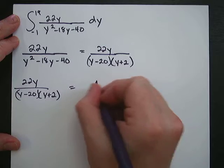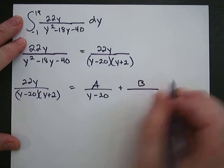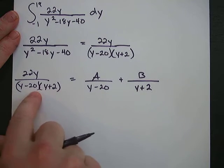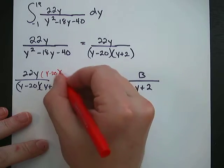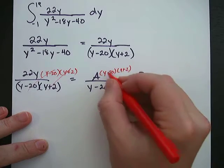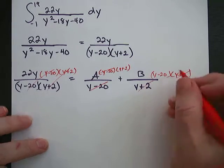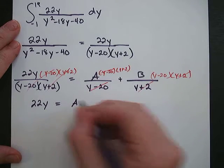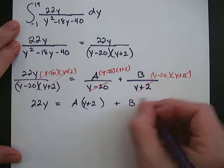We write A over the first factor (y minus 20), plus B over the second factor (y plus 2). Now we multiply everything through by (y minus 20)(y plus 2). On the left that cancels out both denominator terms. On the right, the (y minus 20) factor cancels on the first term and (y plus 2) cancels on the second. That leaves us with 22y on the left, and on the right: A times (y plus 2) plus B times (y minus 20).